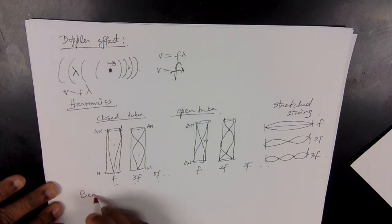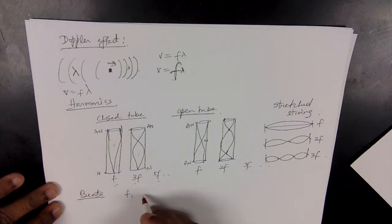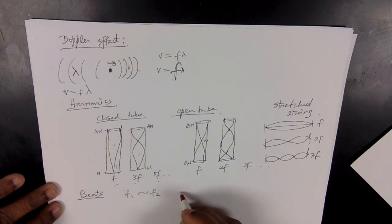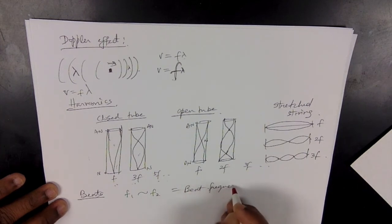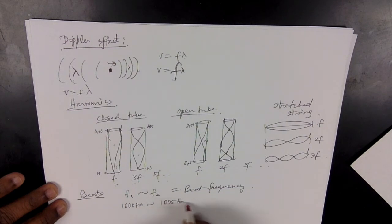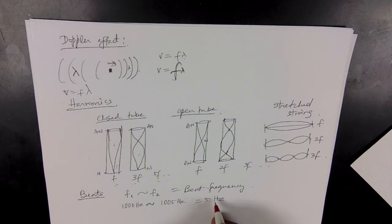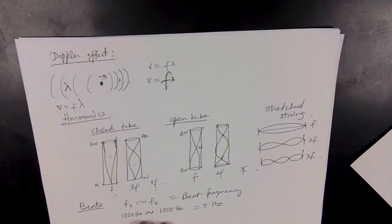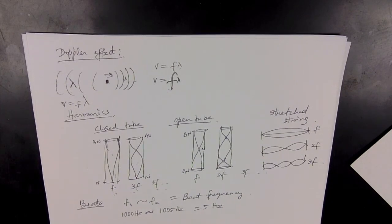The next thing is about beats. When there are two frequencies close to each other, the difference between F1 and F2 is called the beat frequency. For example, if one frequency is 1000 Hz and the other is 1005 Hz, the beat frequency is 5 Hz. You also need to know the characteristics of sound: pitch, loudness, and quality. The quality of sound depends on the waveform; amplitude decides loudness and frequency decides pitch.